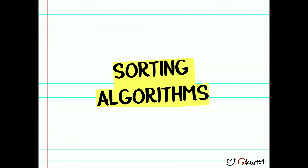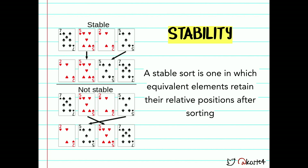So the most used sorting algorithms in JavaScript engines are merge sort, quicksort, and insertion sort for smaller arrays. Now let's talk about the actual sorting algorithms. Stability — a stable sort is one in which equivalent elements retain their relative positions after sorting. Imagine we have cards: a seven of spades, a five of hearts, a two of hearts, and a five of spades. The five of hearts and the five of spades have the same value, but the five of hearts came before the five of spades. If we use a stable algorithm, that original position is preserved. In a non-stable algorithm, the original order can change.